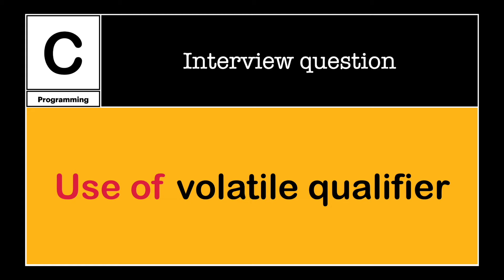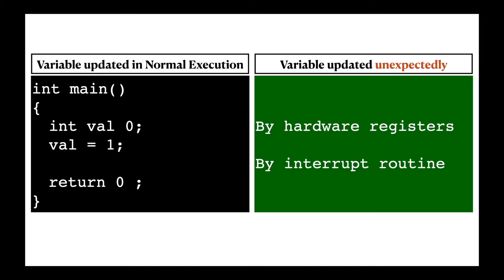This is a very commonly asked question in C programming interviews: what is the volatile qualifier in C? The volatile keyword removes compiler optimization and forces the program to read the variable value directly from memory. It is used with variables whose values are expected to change unexpectedly — meaning the value can be updated outside of the normal execution routine.